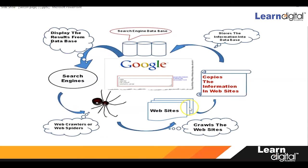Now if a second user comes to the search engine and types the same keyword, this time the crawlers are not going to visit those sites again — they already have the record in their database. When someone types the keyword, the search engine bots look into the database and accordingly show the result on the front side.